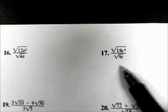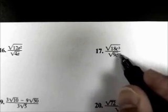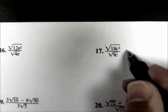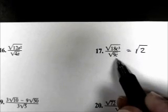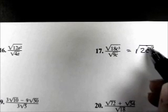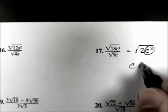Number 17, square root of 18c to the third divided by square root of 9c. There are two approaches: we can do the division directly, or simplify each radical then simplify the fraction. I'm going to do the division: 18 divided by 9 is 2, and c to the third divided by c to the first is c squared. So this is the square root of 2c squared. C squared is a perfect square — out comes its square root, which is c. And the square root of 2 remains.